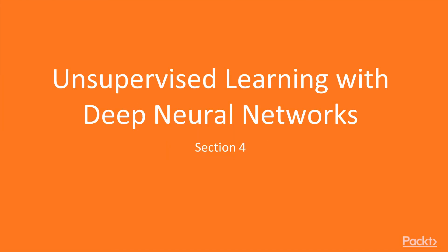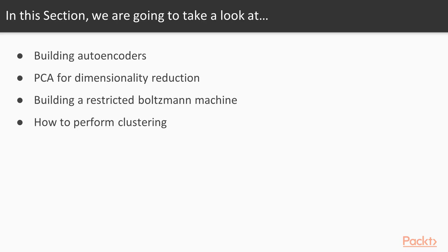Welcome to the fourth and final section of this course. In this section we will talk about unsupervised learning with deep neural networks. In the first video of the section we will talk about autoencoders and how to use them to extract features from a dataset.